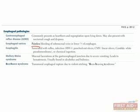Mallory-Weiss and Boerhaave syndrome are both caused by vomiting, and the exam will usually list both in the answer choices, so you need to be able to differentiate the two. Mallory-Weiss is a tear at the gastroesophageal junction from severe vomiting, which usually occurs in alcoholics and bulimics. Boerhaave syndrome is actually a transmural, or through-the-wall, rupture of the esophagus from violent retching, and it's a surgical emergency because bacteria can invade the mediastinum and cause devastating infections.